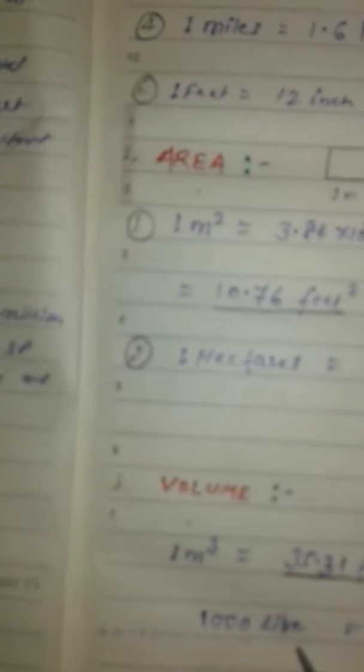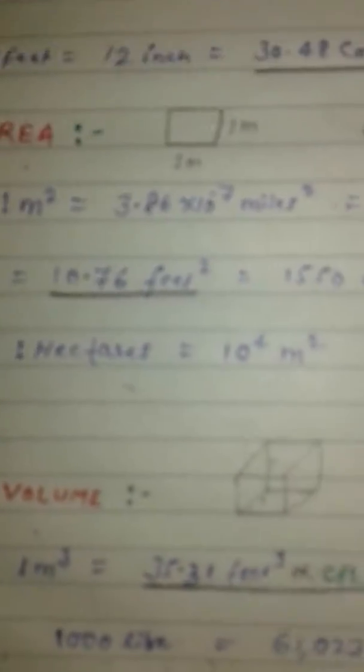One meter cube is also equal to 1000 liters, which is 61,023.74 inches cube.